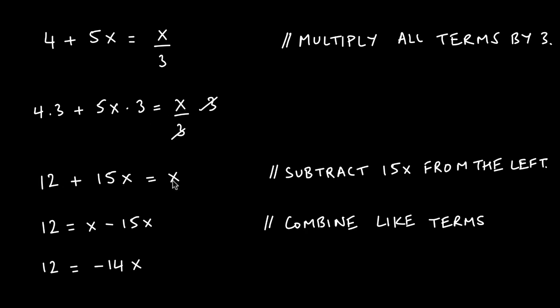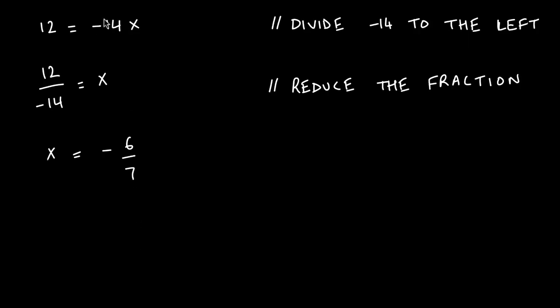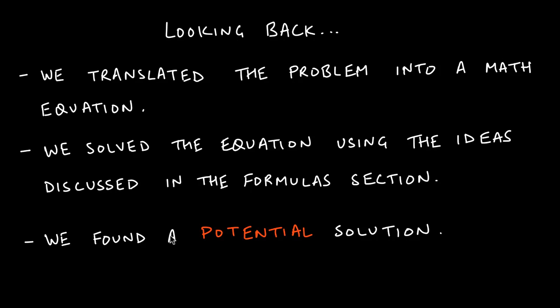We get to this equation with no fractions left. We want to get all variables to one side. We subtract 15x from the left, and combining like terms on the right gives x minus 15x = negative 14x. Then we divide the negative 14 over to the left, reduce the fraction by two—two goes into 12 six times, two goes into 14 seven times—so we're left with x equals negative six over seven. Now this is not our solution. I'll repeat myself: this is not our solution. This is a potential solution.